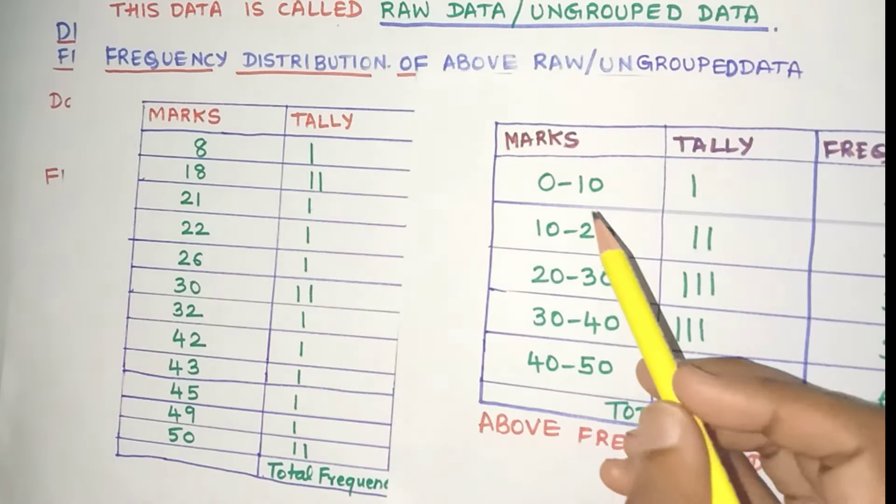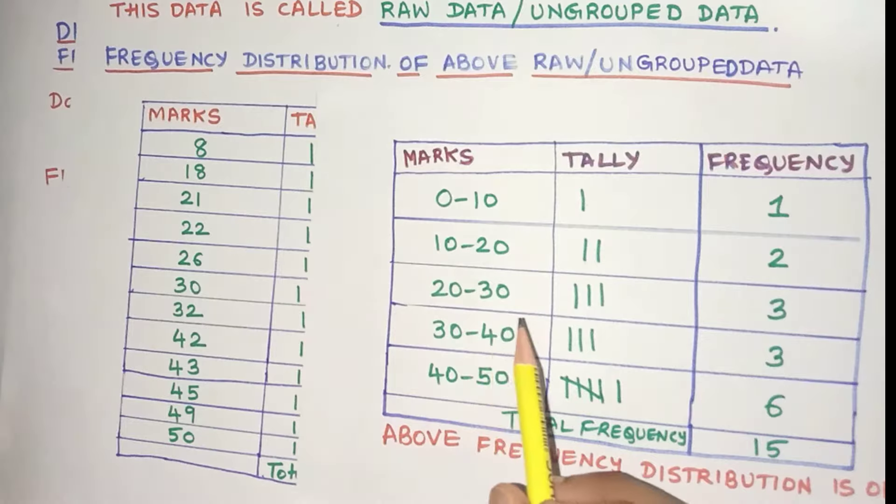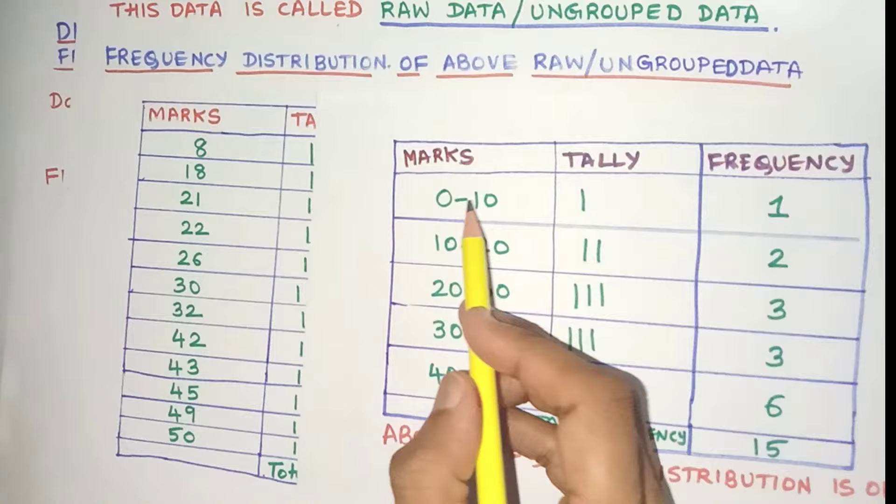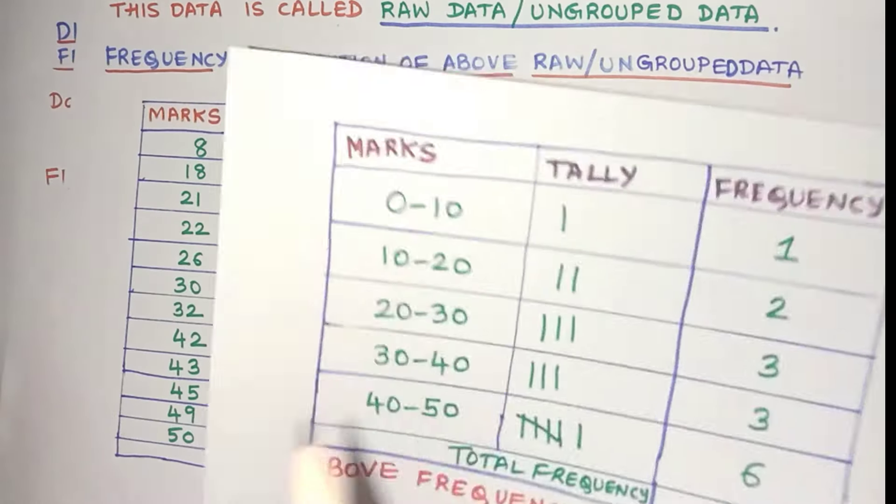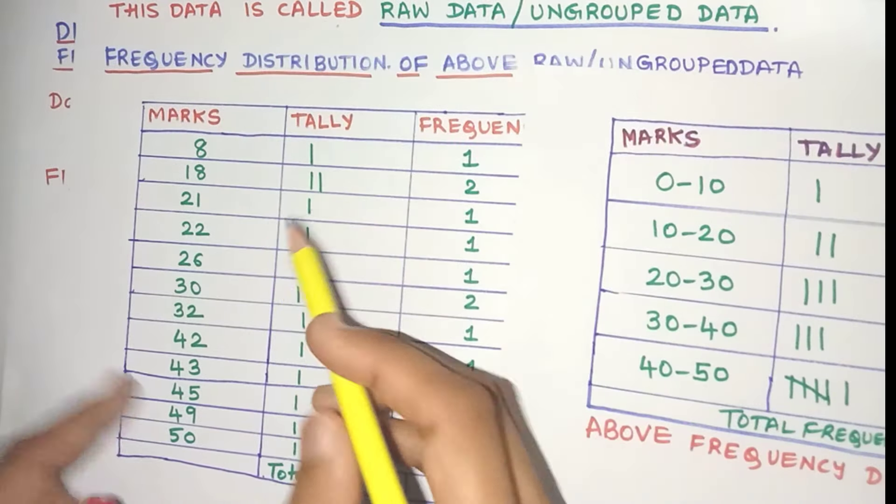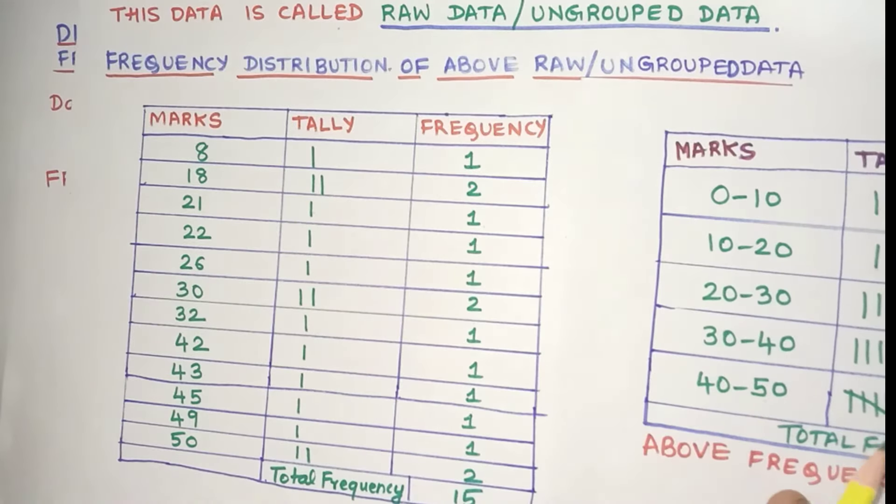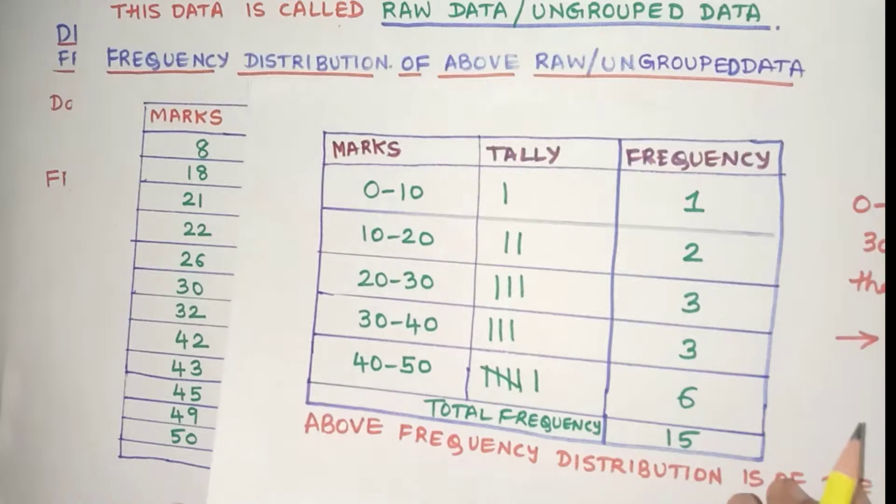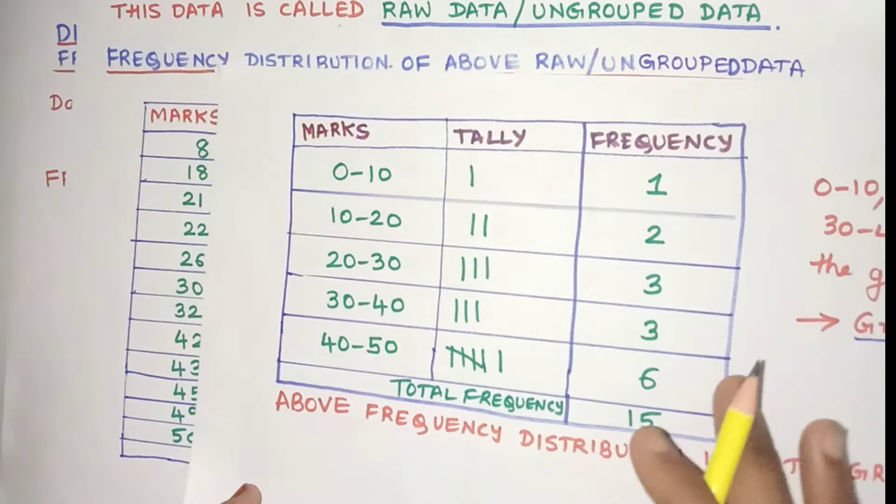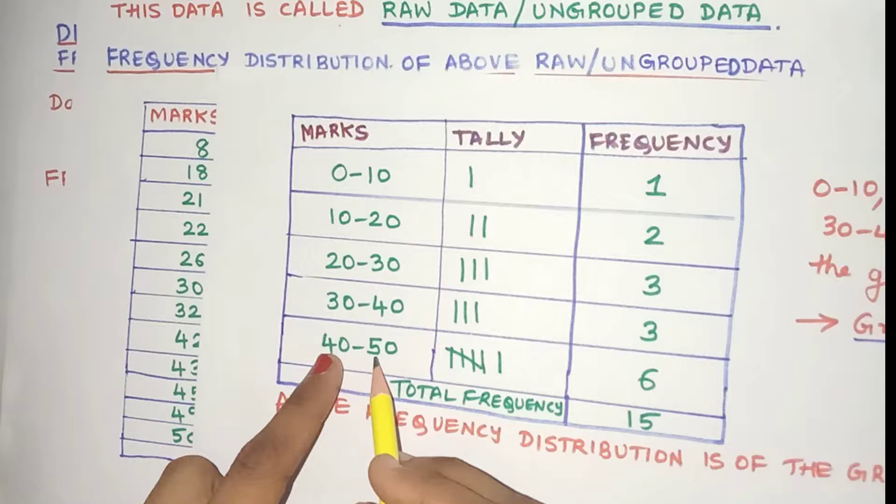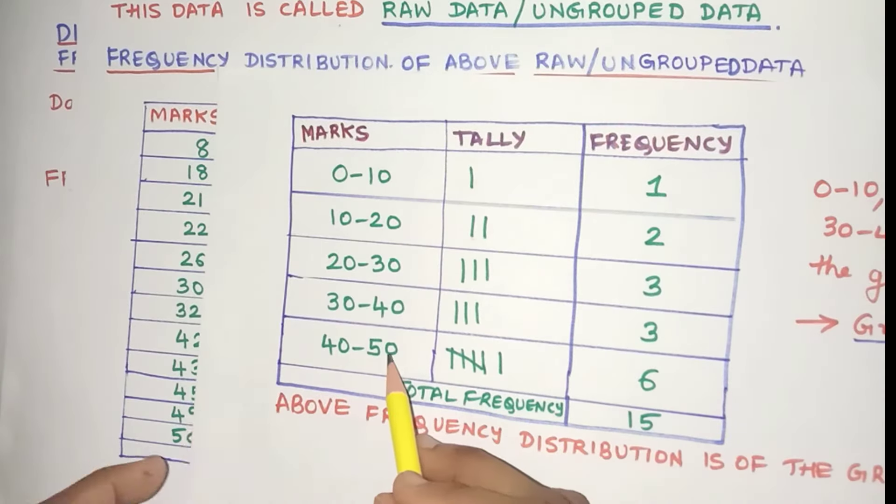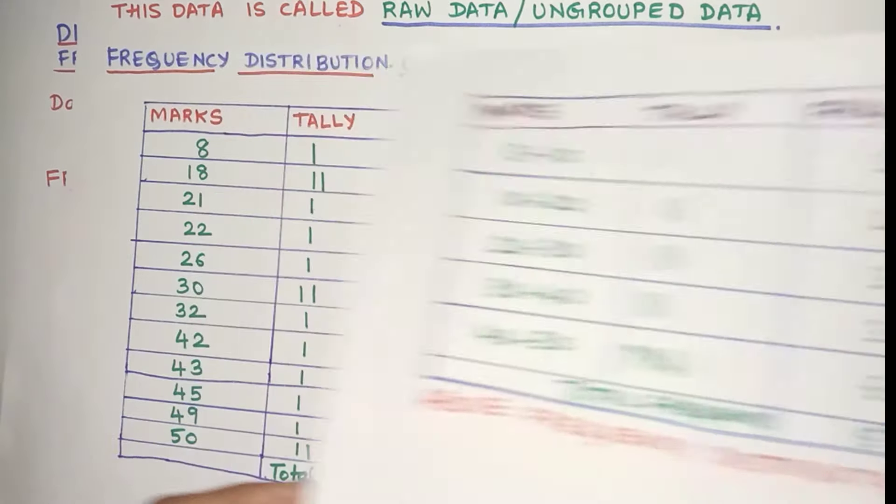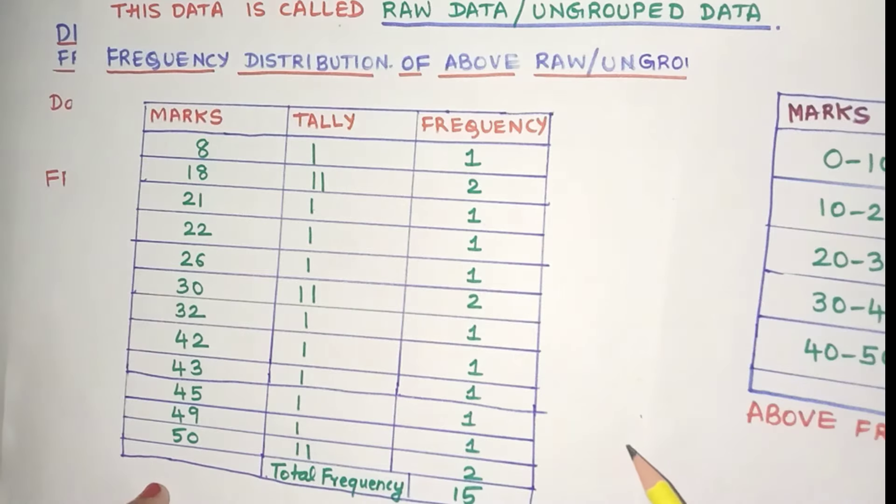Now how many students have scored between 0 to 20? Well, from the grouped data, immediately I can say that three students have scored between 0 to 20. But if I want to collect the same data from here, it will take more time. And that's why grouped data is very convenient for analysis. Because at one glance, you will come to know how the data is distributed. For example, there are six students who have scored between 40 to 50 marks, whereas from this data, it's very difficult to find out the same information.